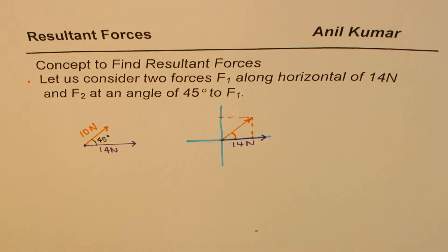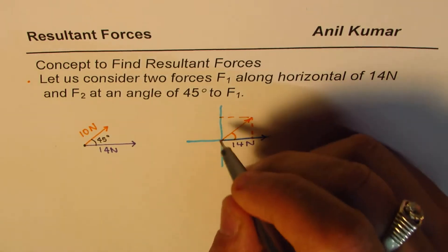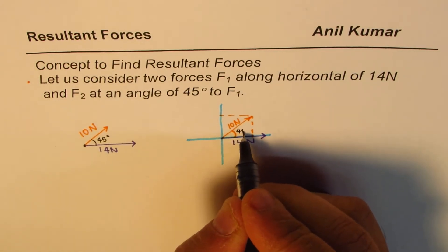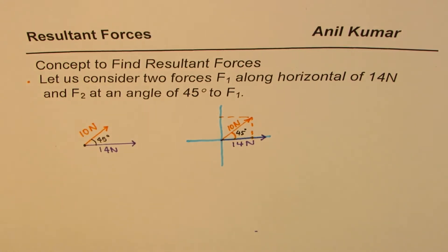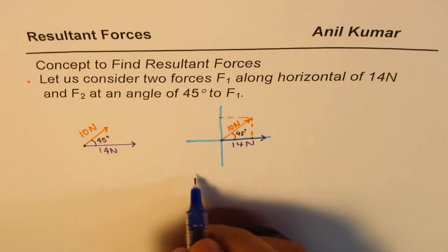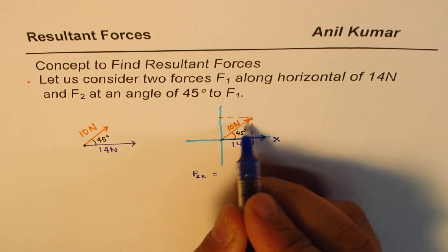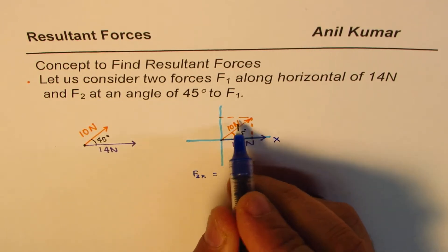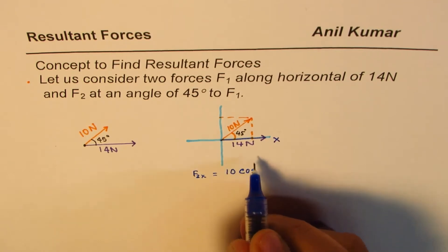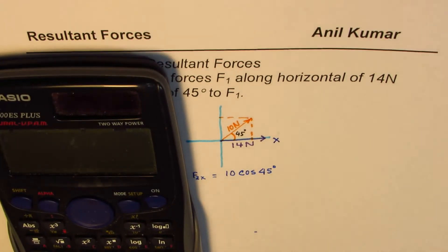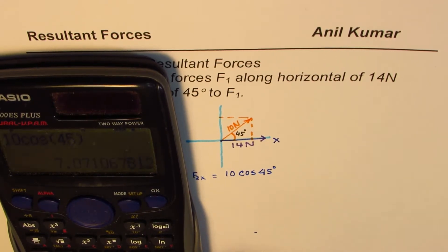One component of the 10 Newton force will be along the 14 Newton force, and the other will be at right angles. Since the angle between the two forces is 45 degrees, the horizontal component — let's call it F2x — equals 10 cos 45 degrees. You can use a calculator: 10 cos 45 degrees equals 7.07.